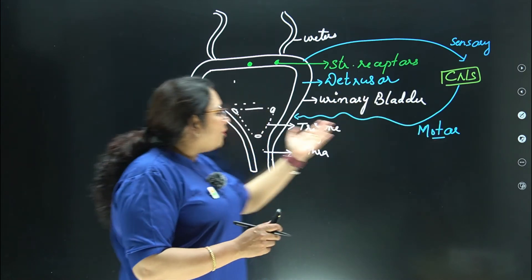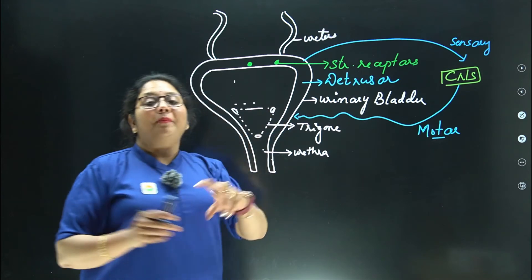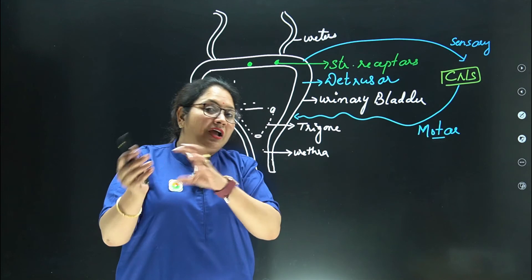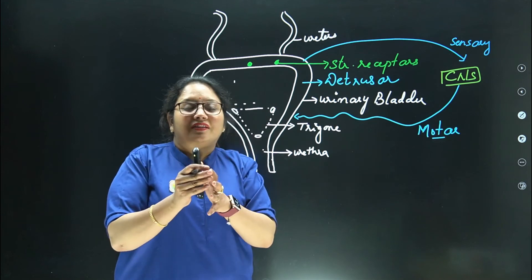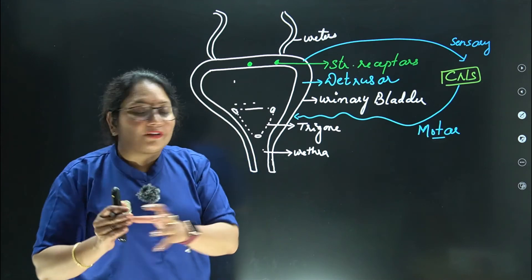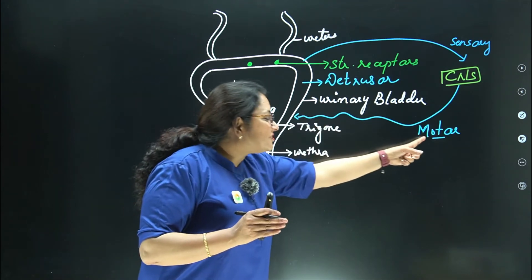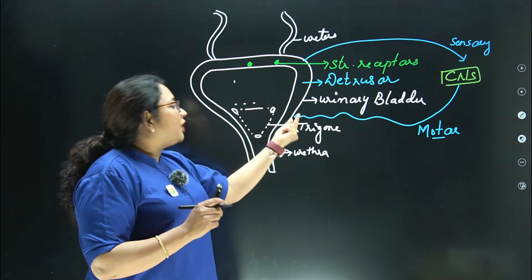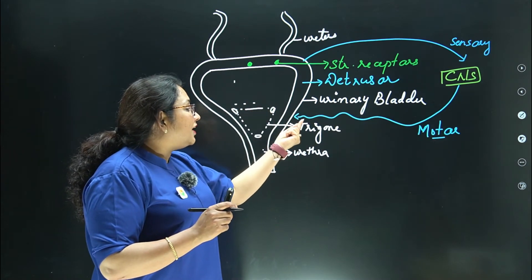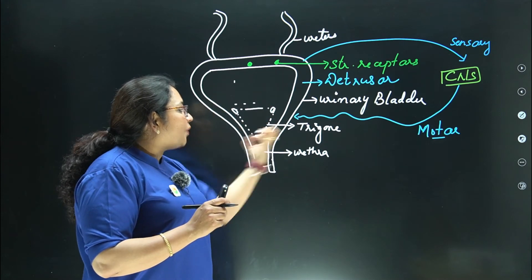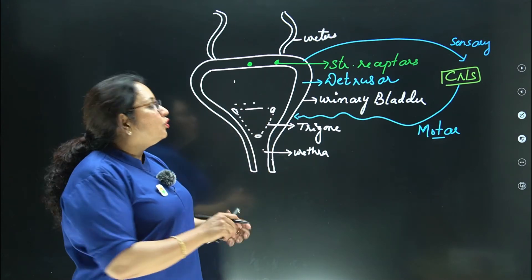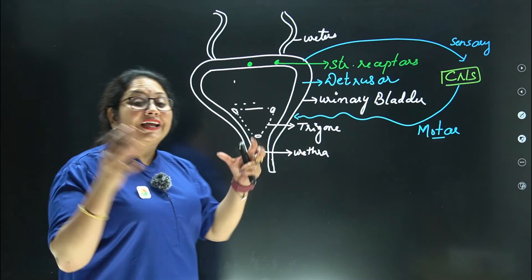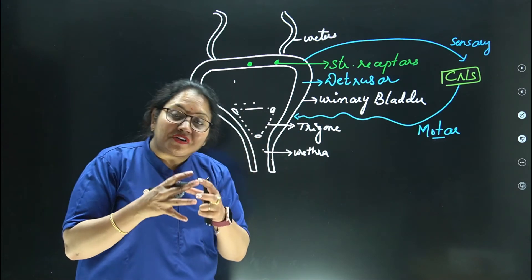Information muscle ke paas aati hai, aur yahan pe neuromuscular junction ban jaata hai, jahan pe nerve aur muscle contact mein aate hain. Motor impulse iske contraction ke liye di jaati hai. Toh yeh jo detrusor muscles hain — smooth muscles hain — yeh contract hongi.